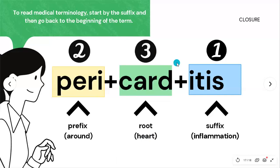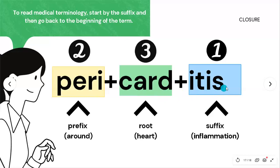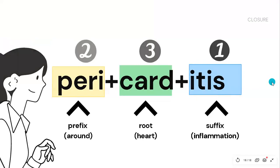Be careful with combining vowels — they have no meaning, but you must handle them correctly when building a word. For example, here we don't need the combining vowel because the suffix starts with a vowel, so it becomes 'carditis.' Remember: prefixes always go at the beginning, before the root; suffixes always go at the end.